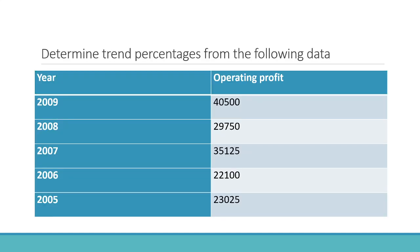Here is a problem regarding the preparation of trend percentages. Determine trend percentage from the following data. The information given includes the year and operating profit for years 2009, 2008, 2007, 2006, and 2005. Trend percentage has to be prepared based on this data. In this case, the oldest year is 2005, so 2005 is taken as the base year. The figure for 2005, which is 23,025, is taken as 100, and then the percentage of other years' values are determined taking 2005 as the base year.